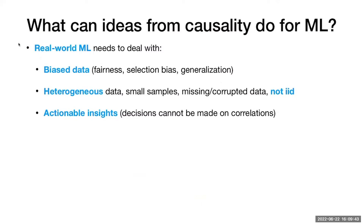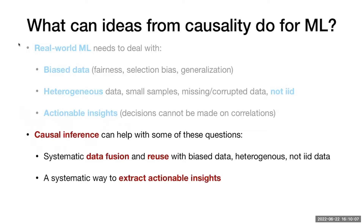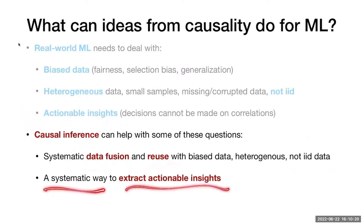Real-world machine learning needs to deal with biased data, fairness, selection biases, generalization issues, heterogeneous data, and finding actionable insights — not just correlations but causation. All of these issues are covered in causal inference, which provides tools for systematic data fusion, reusing biased data, working with non-IID data, and extracting actionable insights for policy decisions.